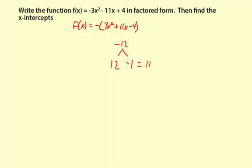Okay, so now I'm going to rewrite this trinomial. Just keep the negative sign out front. And I'm going to put 3x² + 12x - x - 4.